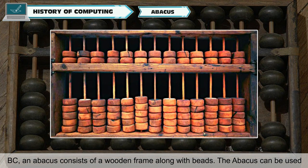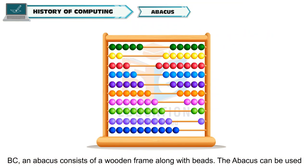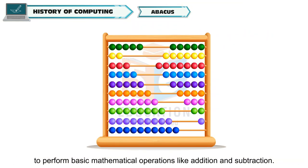The first of these is the Abacus. Believed to be invented by the Chinese around 3000 BC, an Abacus consists of a wooden frame along with beads. The Abacus can be used to perform basic mathematical operations like addition and subtraction.